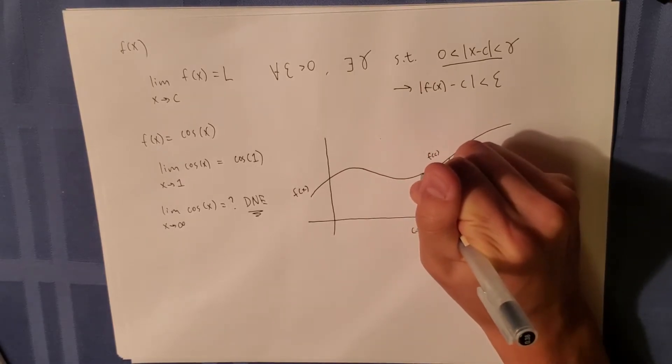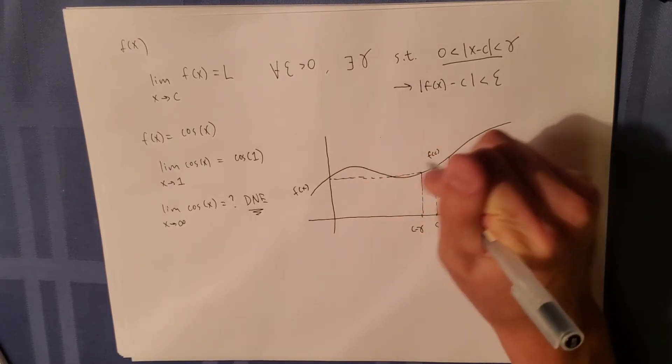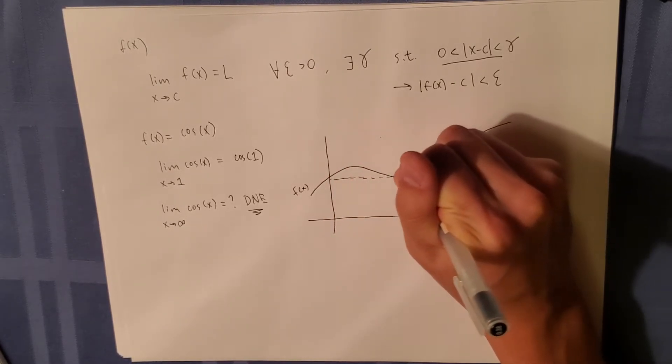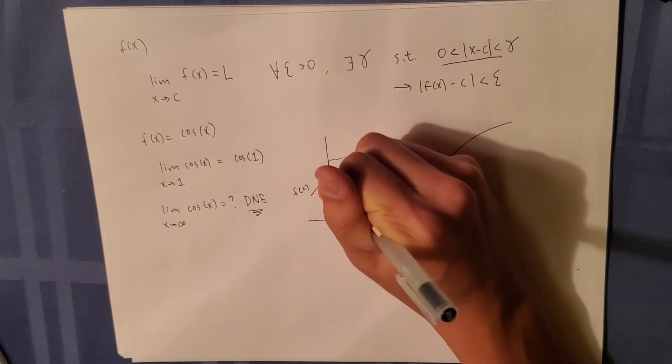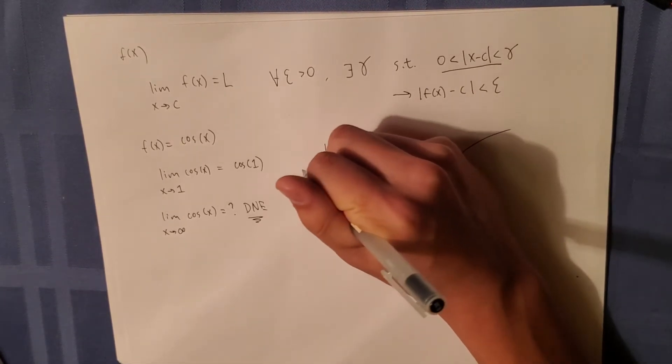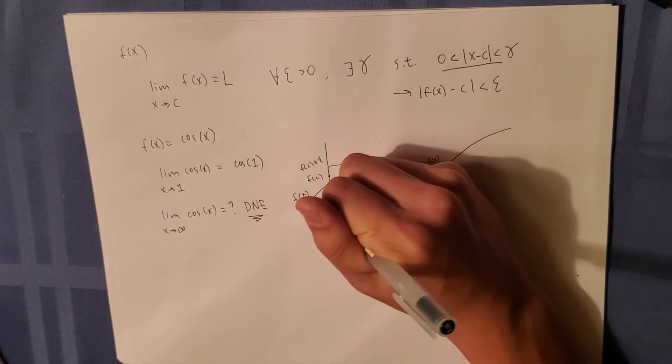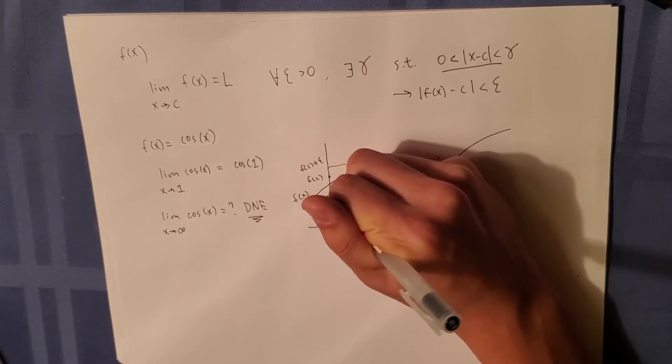This would be f of c here, and this would be f of c plus epsilon, and f of c minus epsilon.